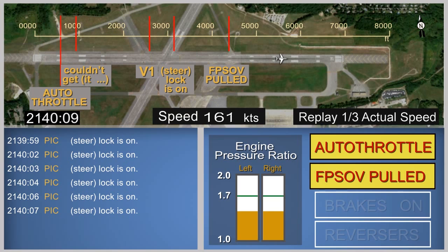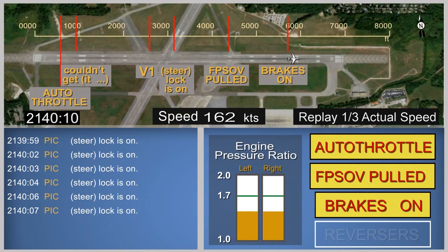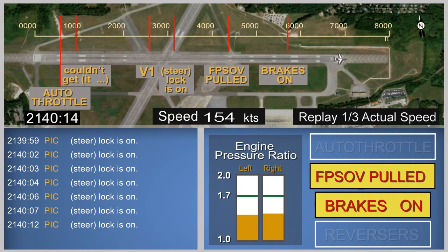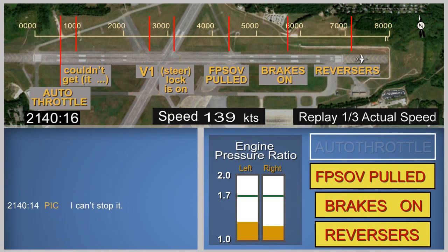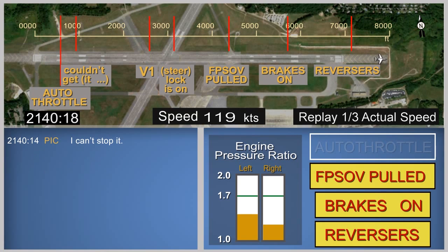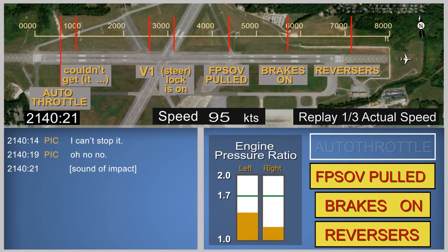About 11 seconds after the rotate call, brake pressure started to rise. This occurred at a ground speed of about 162 knots with about 1,400 feet of runway remaining. Four seconds later, the throttle levers were pulled back and the pilot in command said "I can't stop it." The airplane exited the runway onto the paved overrun and the thrust reversers were deployed. The airplane exited the paved overrun onto the grass traveling about 105 knots. The sound of an impact was recorded about one second later at a ground speed of about 97 knots, followed by the end of recorded data.